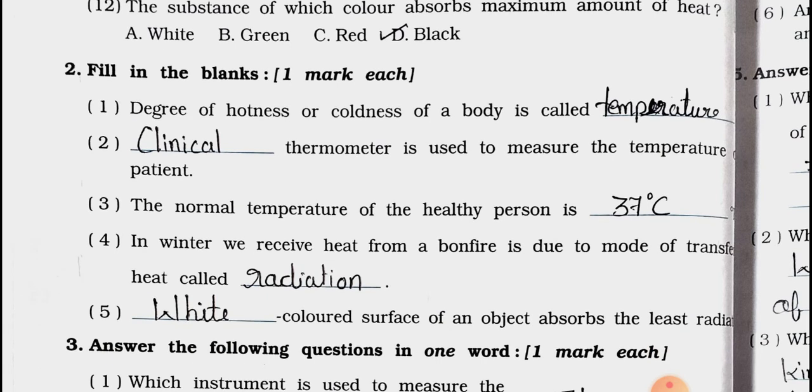Degree of hotness or coldness of a body is called blank. Answer is temperature. Degree of hotness or coldness of a body is called temperature. Number 2: Blank thermometer is used to measure the temperature of patient. Answer is clinical. Clinical thermometer is used to measure the temperature of the patient.